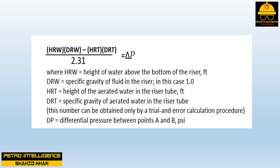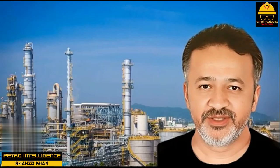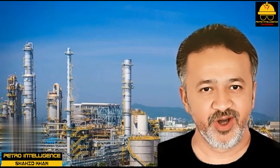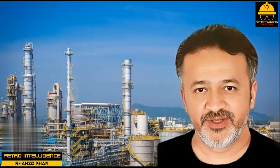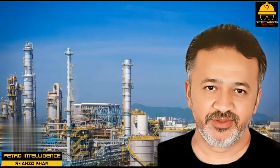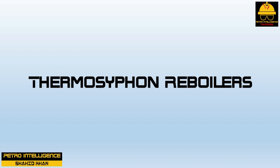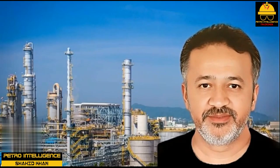In a thermosyphon or natural circulation reboiler there is no source of air. The aerated liquid is a froth or foam produced by the vaporization of the reboiler feed. Without a source of heat there can be no vaporization, and without vaporization there will be no circulation. So the source of energy that drives the circulation in a thermosyphon reboiler is the heating medium to the reboiler.